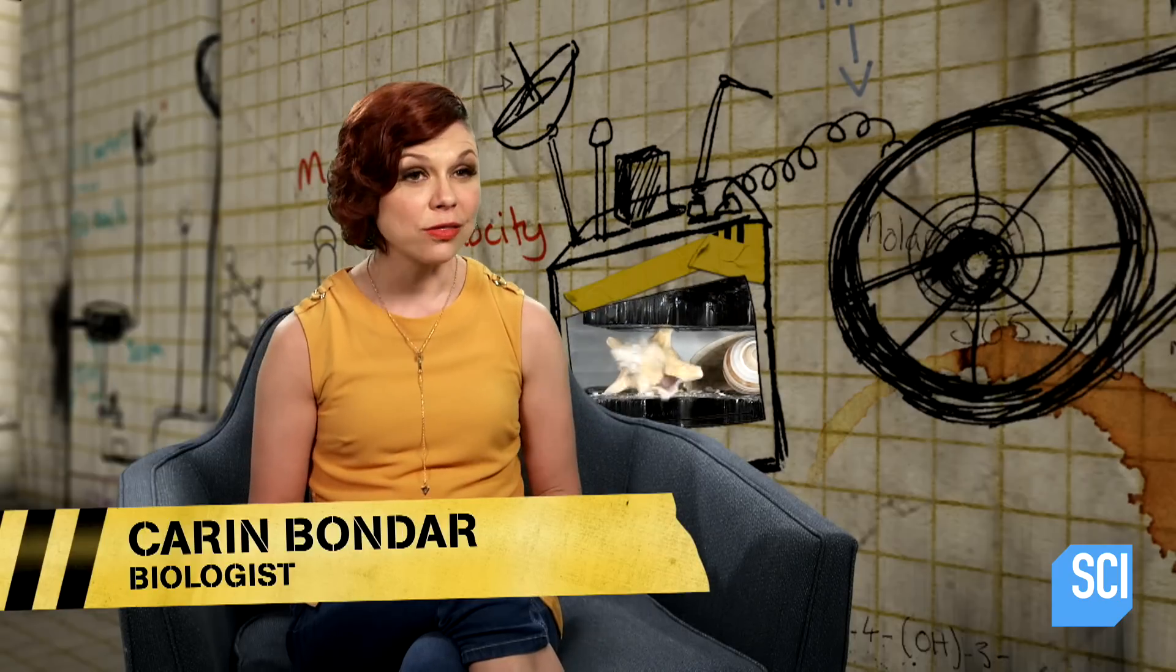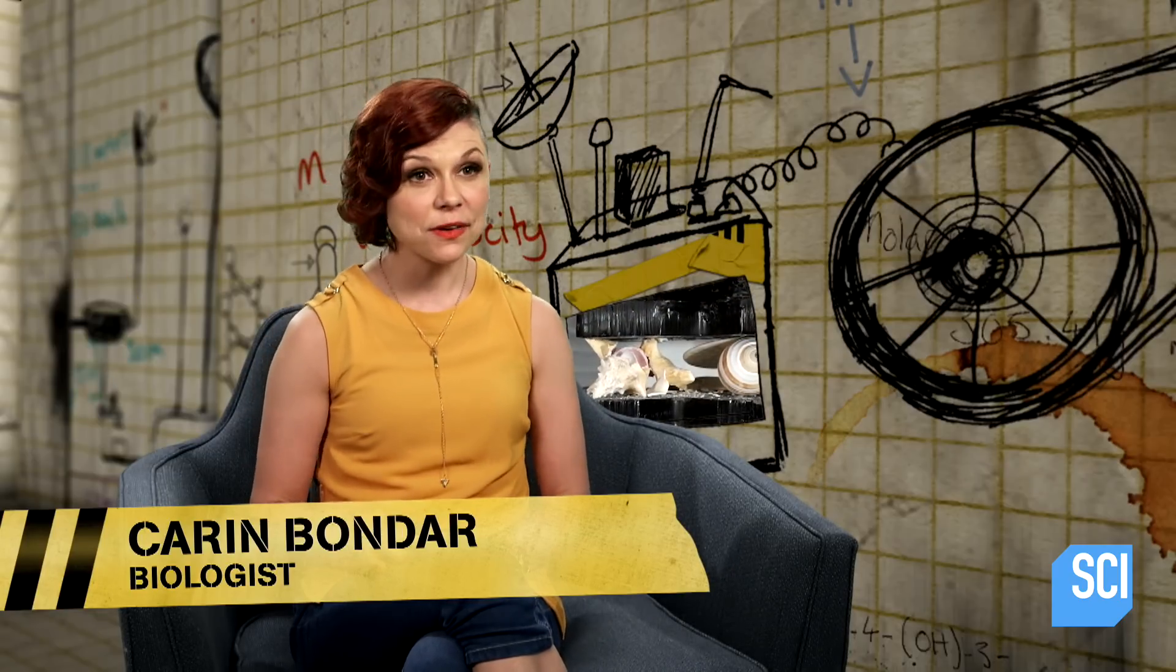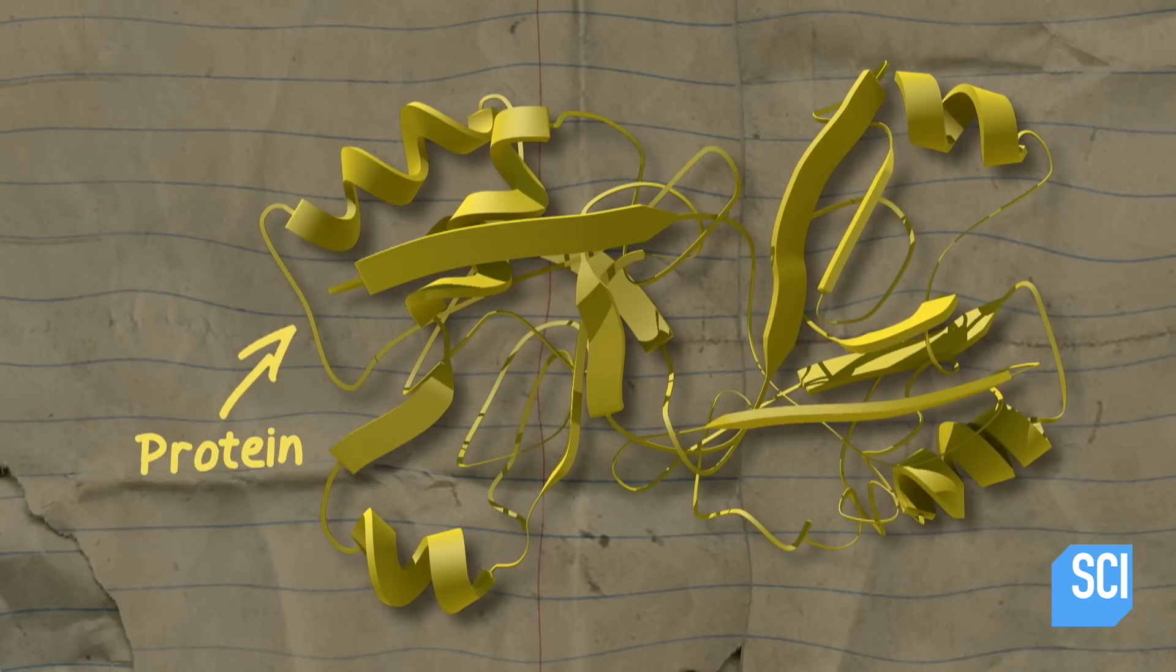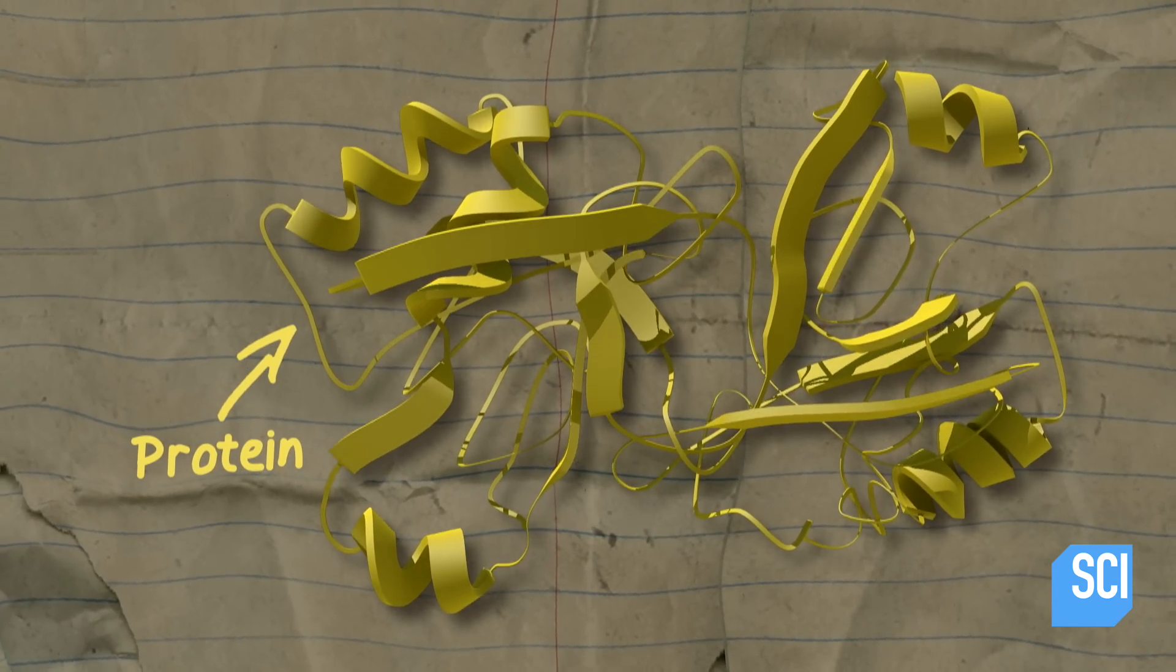Mollusks begin to work on their shells from a very early developmental stage. They secrete a special class of proteins that acts almost like a scaffolding, upon which calcium carbonate is deposited.